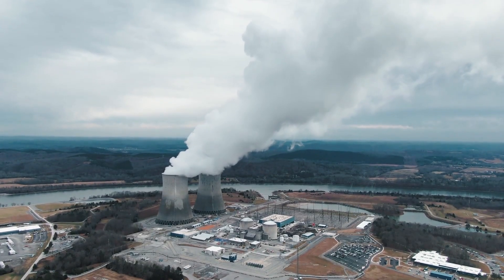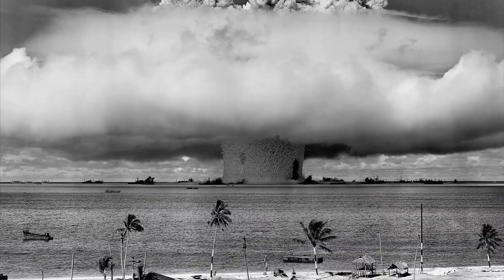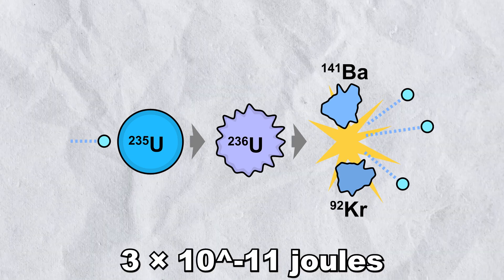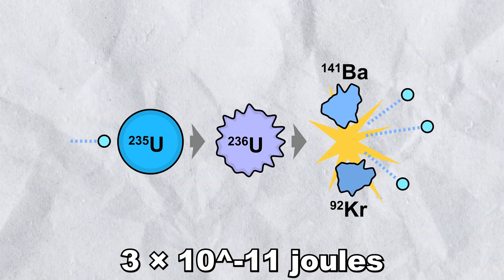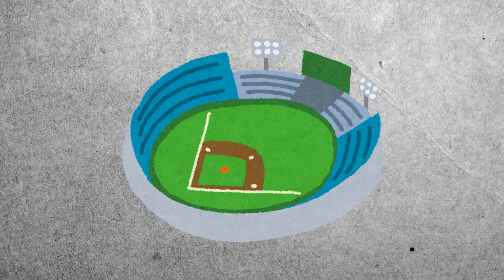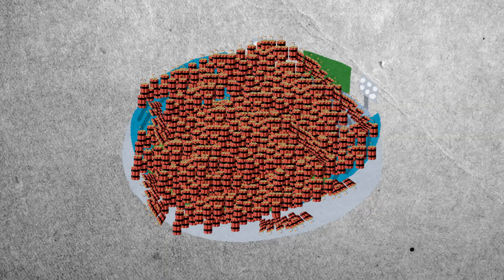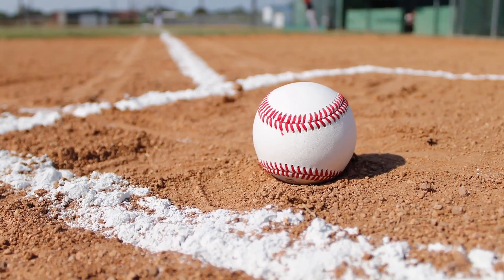It's designed to release energy slowly over years, not all at once. Each fission event releases about 200 million eV of energy. Now that might not sound like much for a single atom, but it would take a Yankee Stadium full of dynamite to equal the energy released by U-235 the size of a baseball.